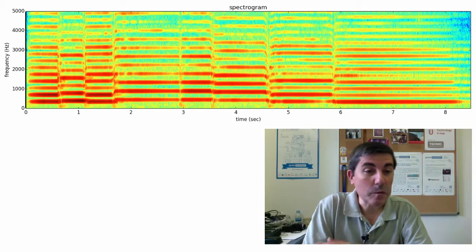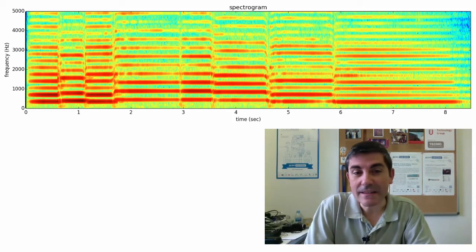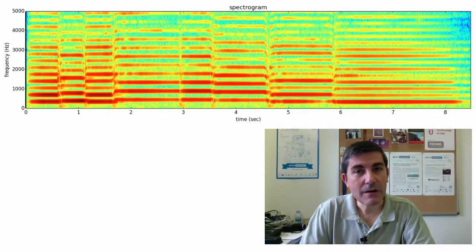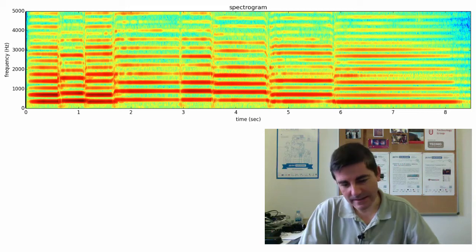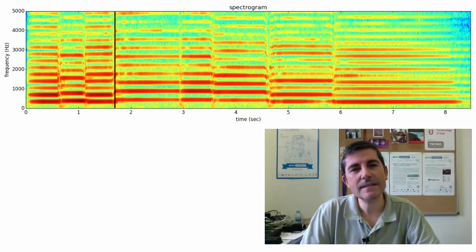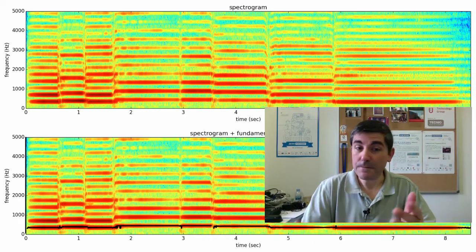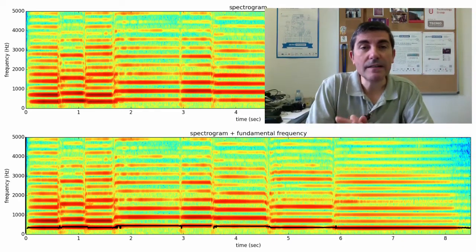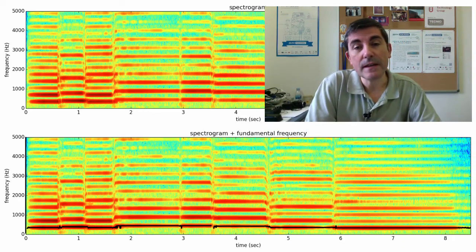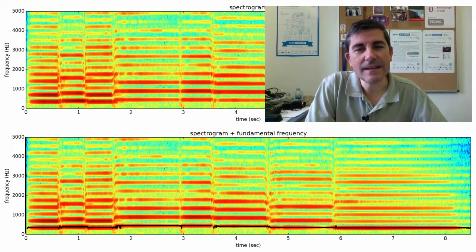Let me show you an example of the more practical things that we learn during the course. This is the spectrogram of a sound I played on my cello. From the spectrum, we can identify the fundamental frequency of the sound, which can then be synthesized as a sine wave.